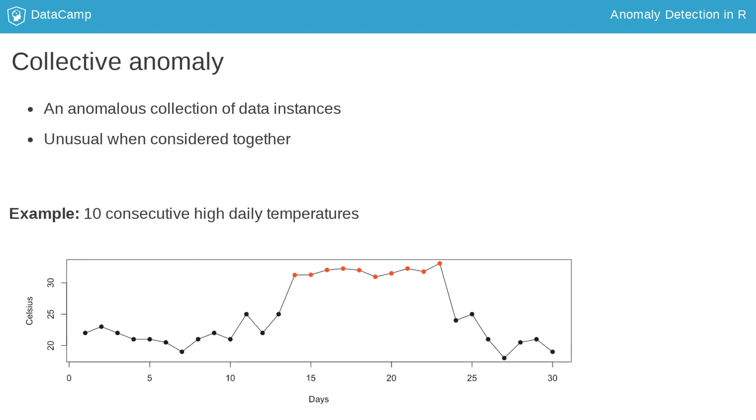A collective anomaly is a collection of similar data instances that can be considered anomalous together when compared to the rest of the data. For example, a consecutive 10-day period of high temperatures is shown by the red points in the plot. These daily temperatures are unusual because they occur together and are likely caused by the same underlying weather event.